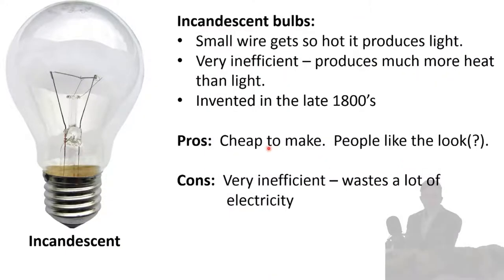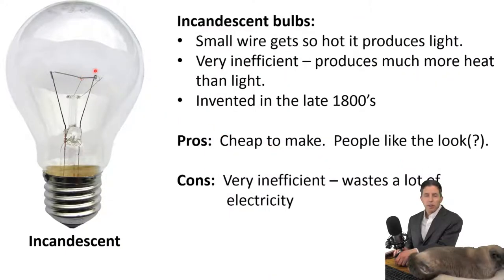Okay so incandescent, these things have been around since the late 1800s. These are of all the things in your house that use electricity, if you have an incandescent light bulb, it is the most obsolete by far. The way it works is that there's this little wire in here called the filament. It's made of tungsten and electricity flows through this wire and it gets so hot that it glows. Now it turns out they're very very inefficient and you can think of it as like a heater that happens to make some light.